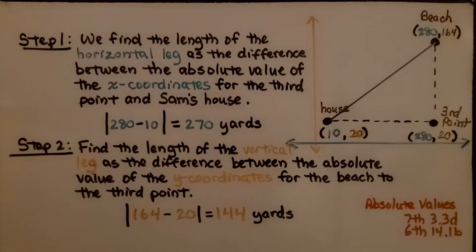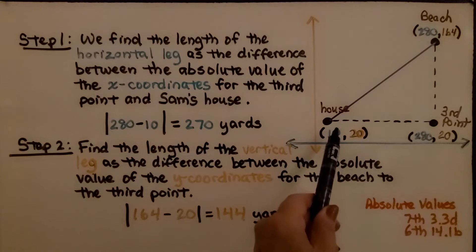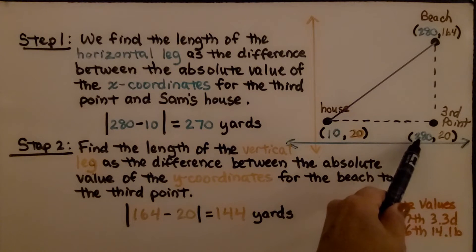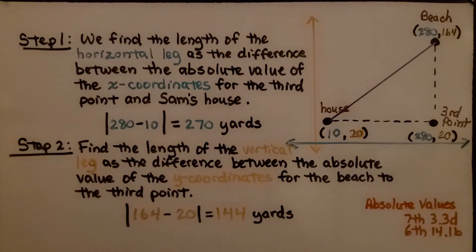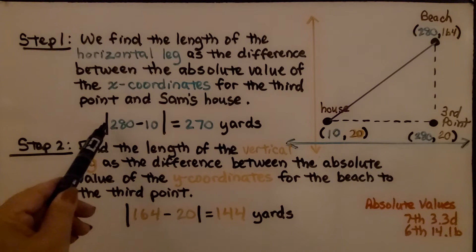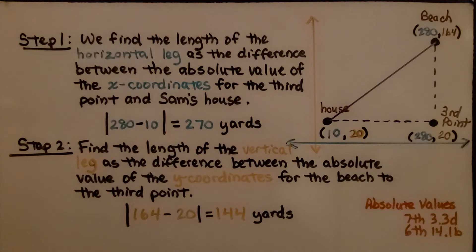Now we take the absolute value because lengths can only be positive numbers. So we could do the absolute value of 10 minus 280, which is negative 270, but the absolute value of negative 270 would be a positive 270.